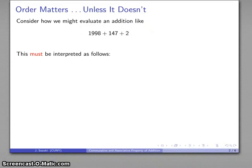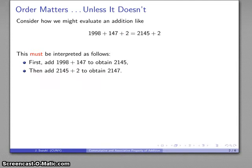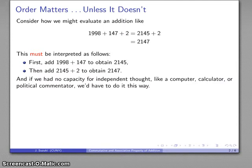Because we read from left to right and because addition is a binary operation, we have no choice. We have to interpret this as the sum 1,998 plus 147. Now we can actually do this. We can find 2,145, then add 2 to get our final answer 2,147.